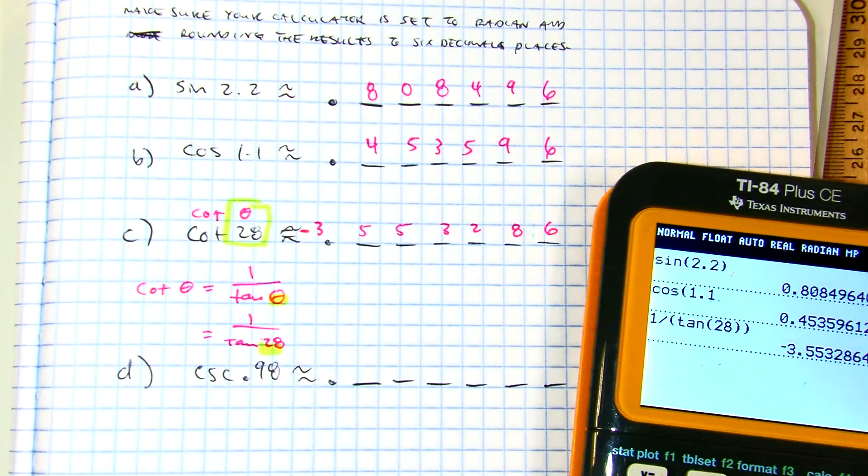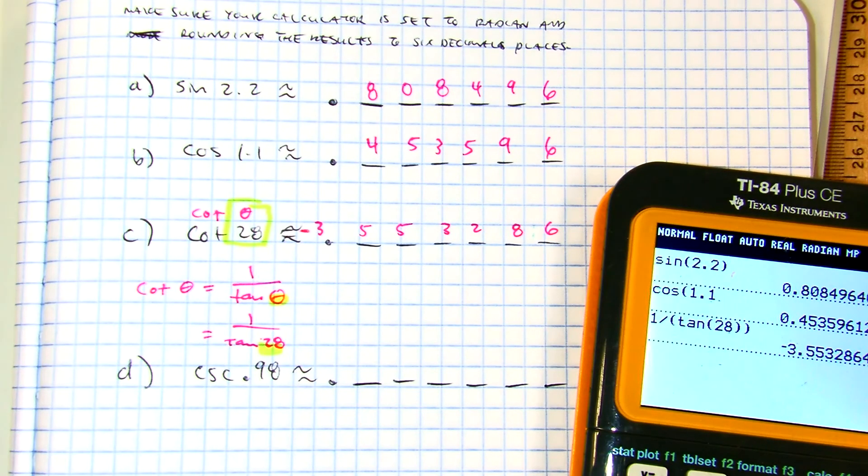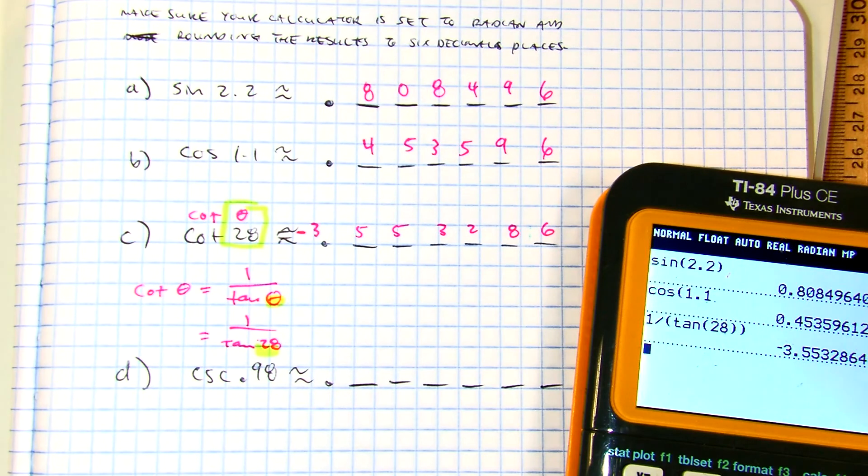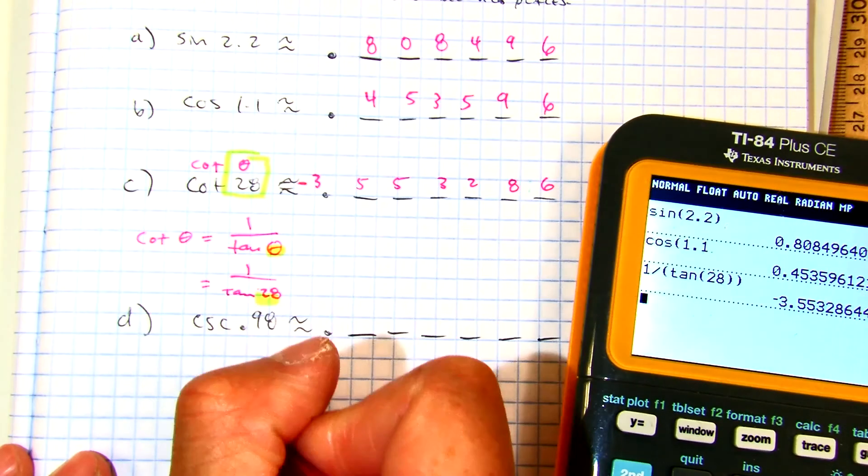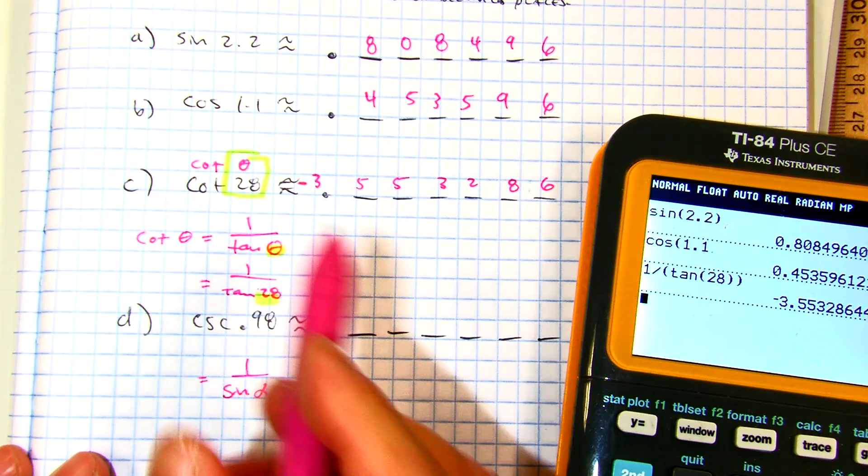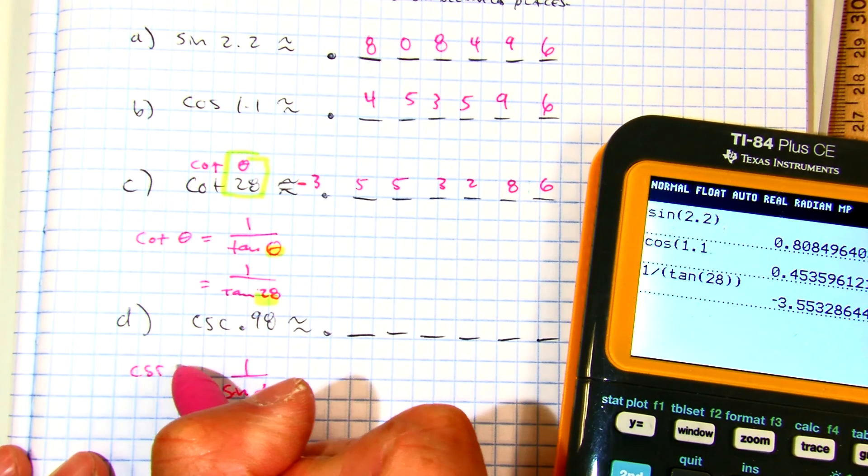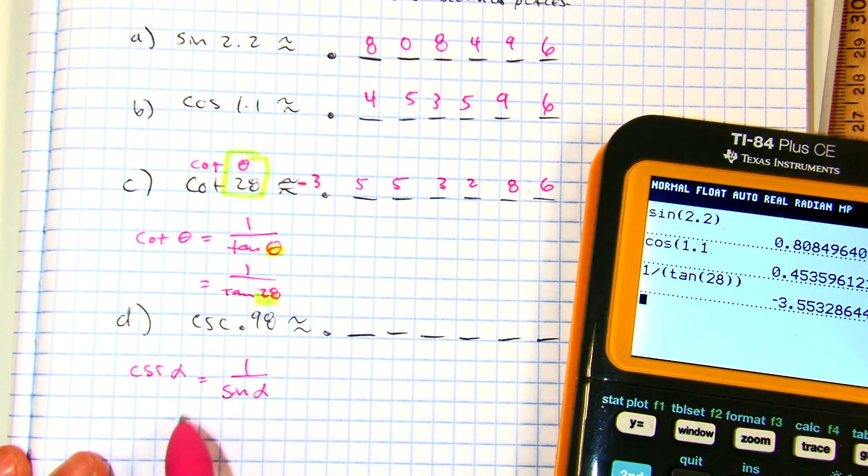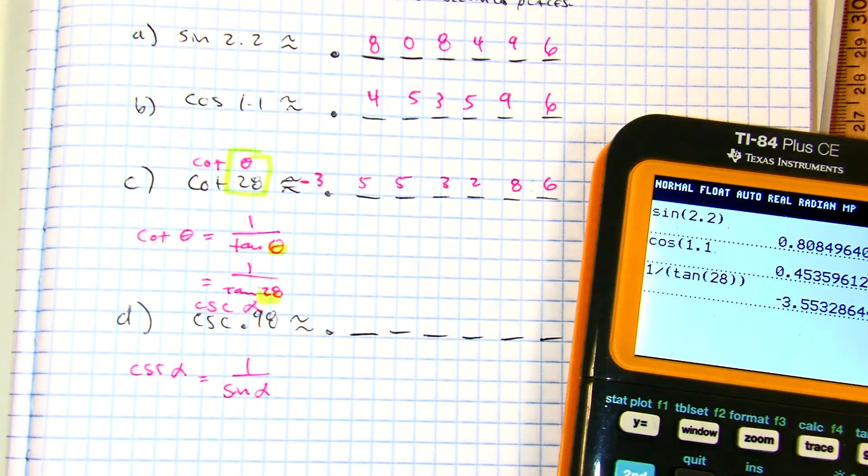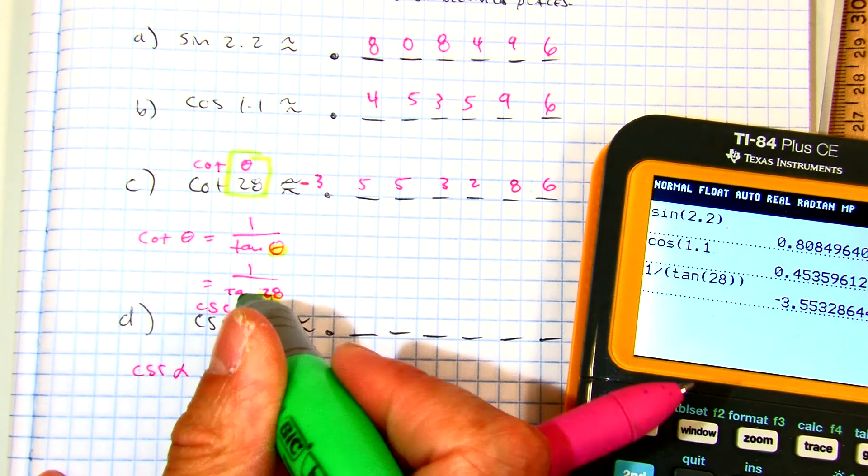Let's do the last one. Sebastian, what is the reciprocal identity we're going to use here? Sure, you want to use alpha? So cosecant of alpha or an angle equals 1 over sine. That's the reciprocal identity.